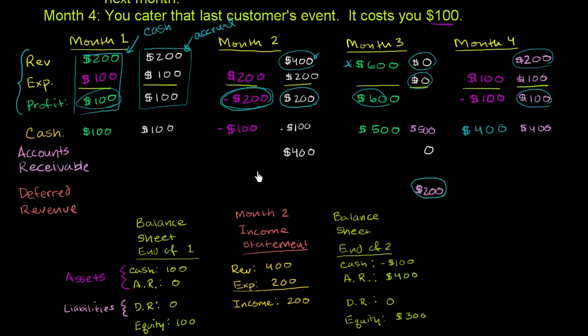So I'm going to start off. We're going to focus on month two. And what I've done is I've just rewritten some of this accrual income statement down here, so it really looks like a statement. So this right here is the income statement for month two on an accrual basis. In that month, we said we had $400 of revenue, $200 of expense,